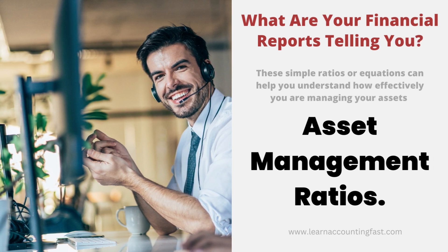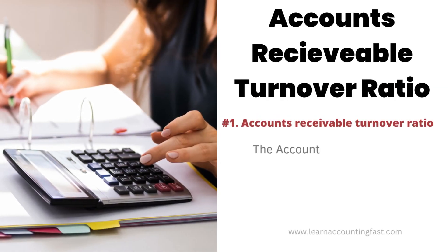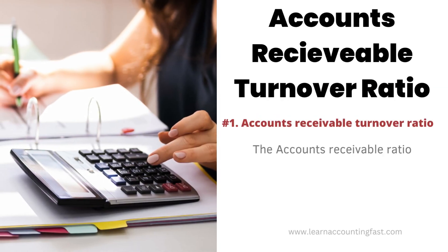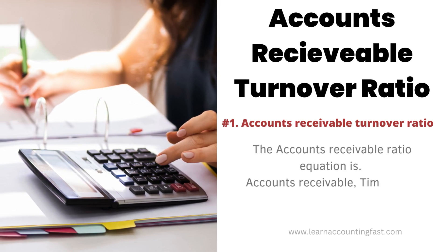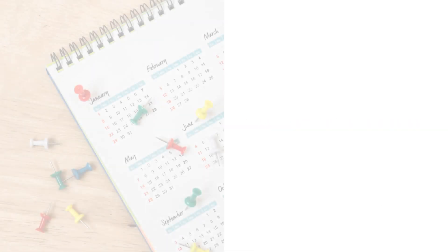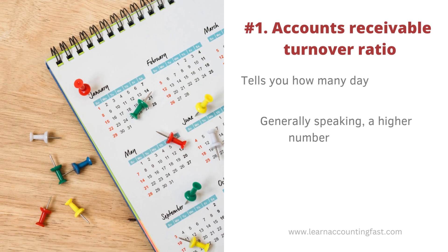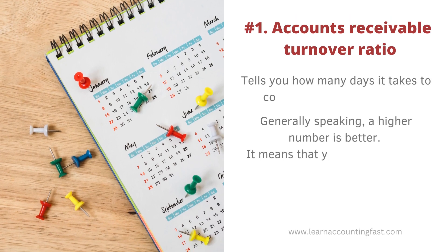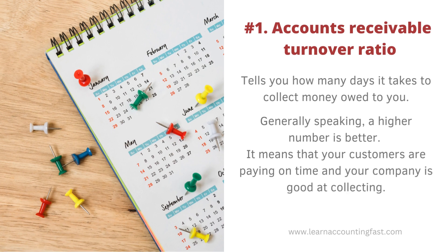Asset Management Ratios, Number 1: Accounts Receivable Turnover Ratio. The accounts receivable ratio equation is: accounts receivable times 365 divided by net sales. This tells you how many days it takes to collect money owed to you. Generally speaking, a higher number is better — it means that your customers are paying on time and your company is good at collecting.